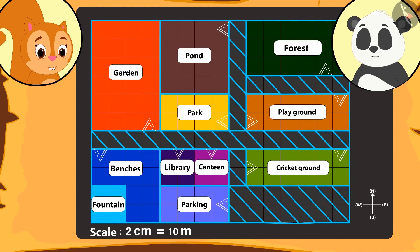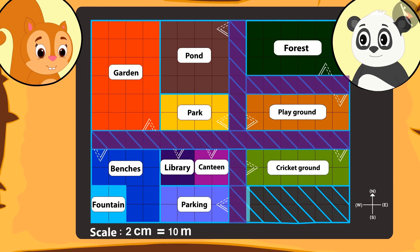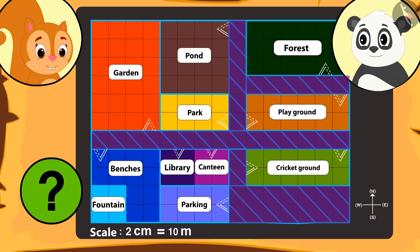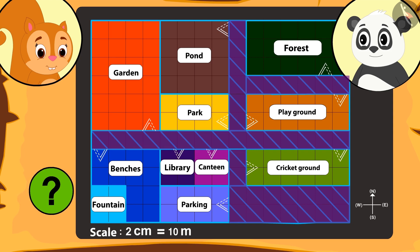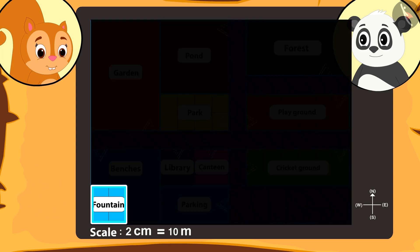Chanda tells Golu that she can spot roads everywhere — there is at least one road near every place. Then Golu tells her that there is one place besides which there is no road. Can you find that place on the map? That's right — there is no road near the pond.